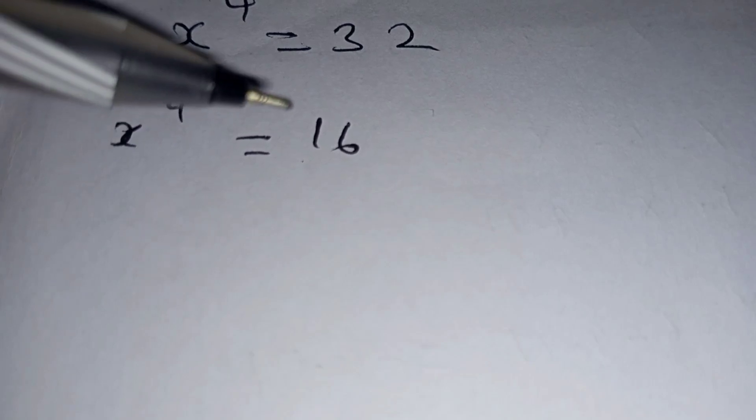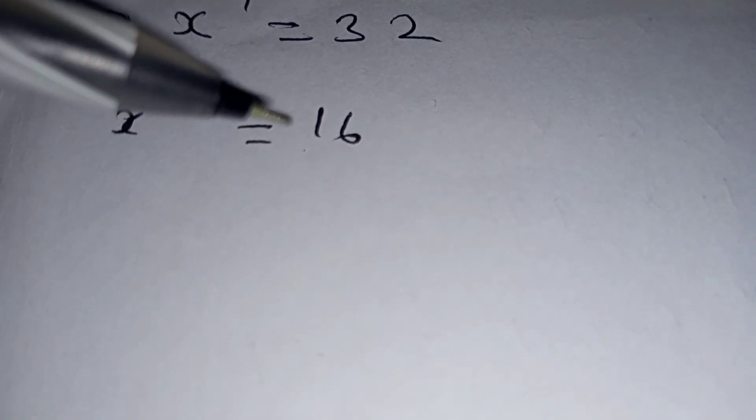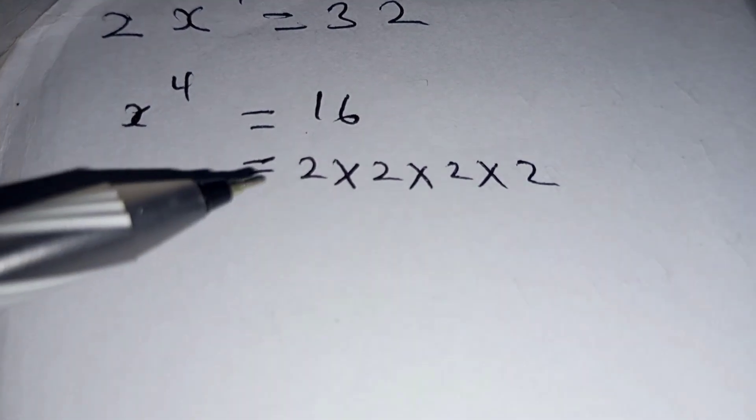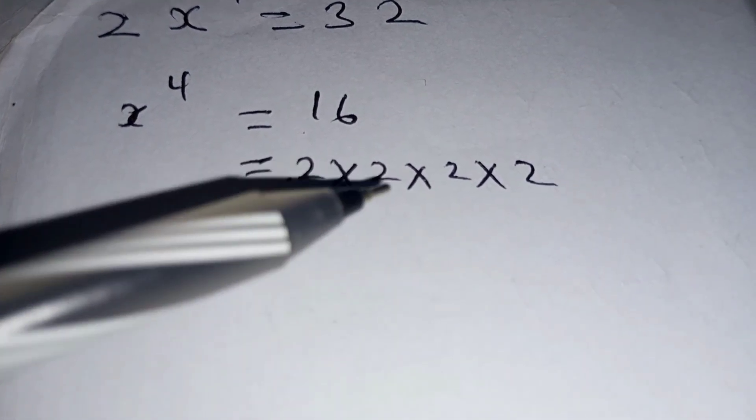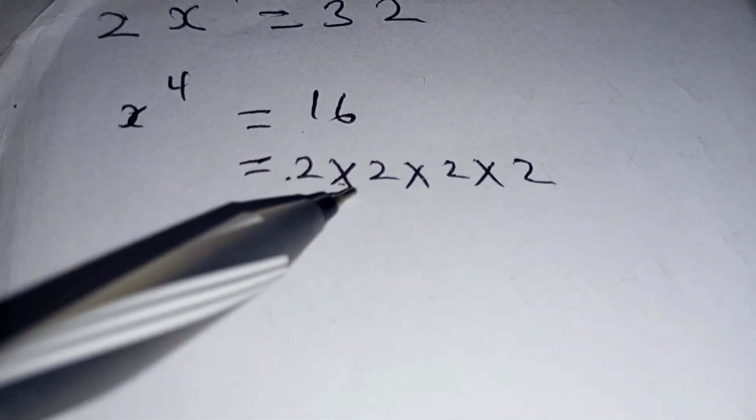Then we write 16 in terms of 2. 16 is the same as 2 times 2 times 2 times 2, since 2 times 2 is 4.